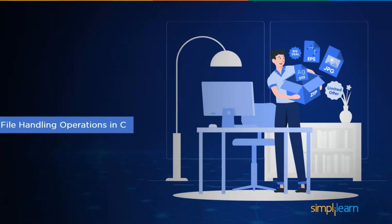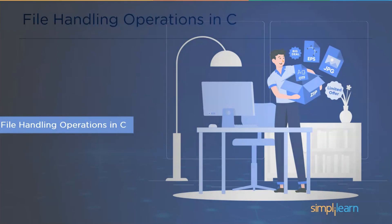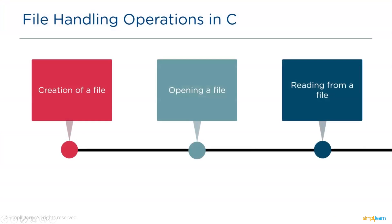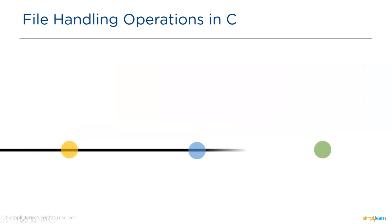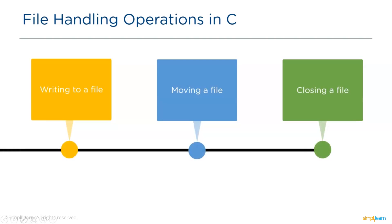Now let's look at the file handling operations in C. To do any operations on a file, we first create a file and then perform operations. If the file already exists, we open it and perform the task. Once a file is created or opened, we read from it or write to it, or perform both operations. The next operation is to move a file to a specified location if required. Otherwise, the last operation is to close the file — whenever we open a file it's compulsory to close it.